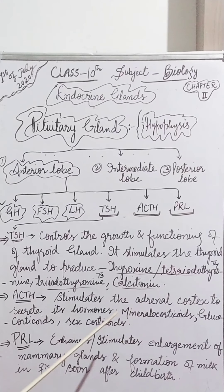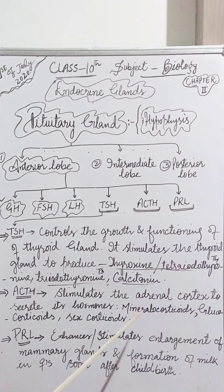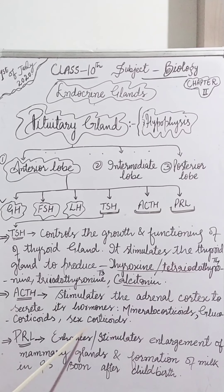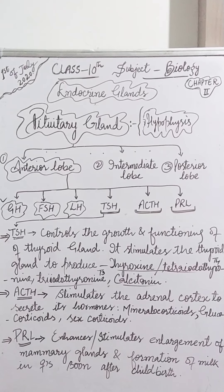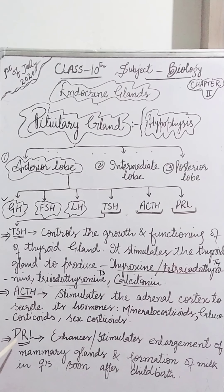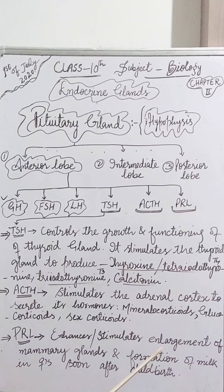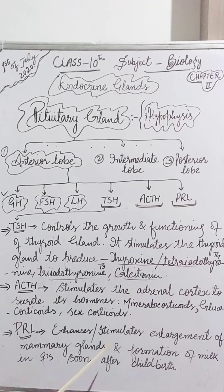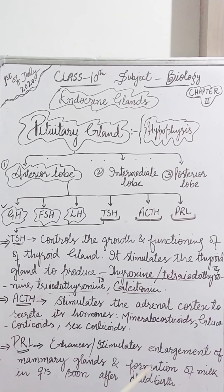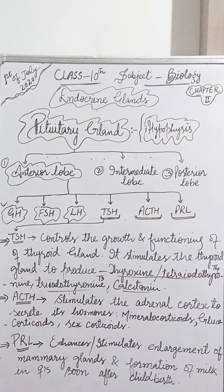Adrenocorticotropic hormone stimulates the adrenal cortex to secrete mineralocorticoids, glucocorticoids, and sex corticoids. The sixth hormone secreted by the anterior lobe of the pituitary gland is prolactin, or PRL. Prolactin stimulates the enlargement of mammary glands in females and the formation of milk soon after childbirth.